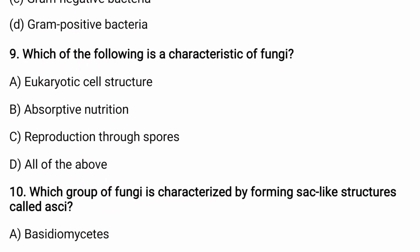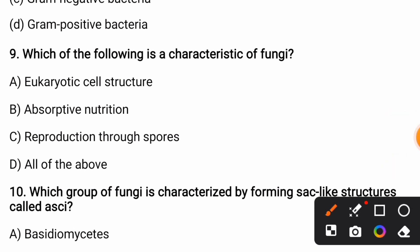Which of the following is a characteristic feature of fungi? Options are: eukaryotic cell structure, absorptive nutrition, reproduction through spores, or all of the above. The correct answer is all of the above. These three characteristics are the characteristic features of fungi.